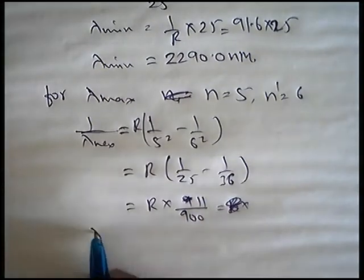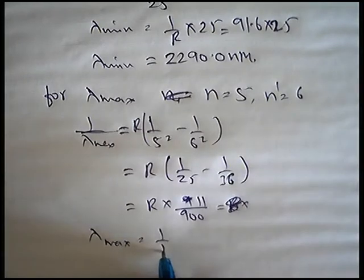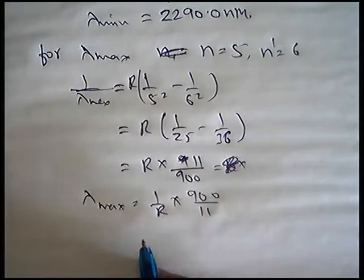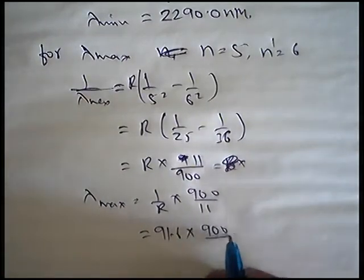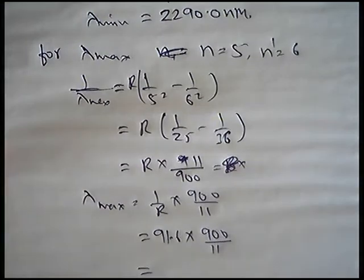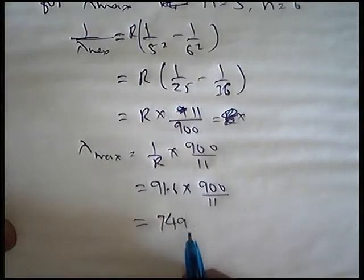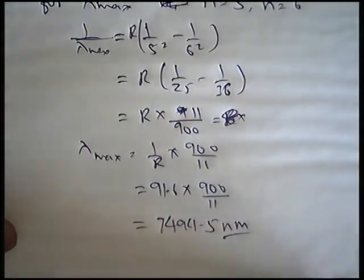Phir ab yaha lambda maximum ho gya aapka, 1 by R into 900 by 11. 1 by R, 91.6 into 900 by 11. Aur iski maximum value, zara calculate karo ek baar. 7494.5 nanometer.